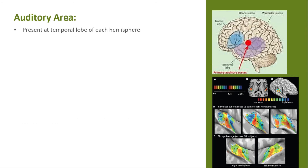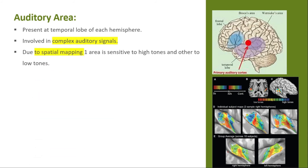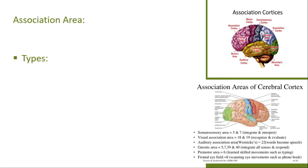The auditory area is present in the temporal lobe. Each hemisphere is involved in the analysis of complex auditory signals. Within the auditory area, there is special mapping: one area is sensitive to high tones and another to low tones. Both are represented in the auditory area, but the connection is stronger to the opposite side.